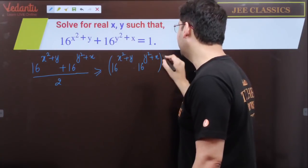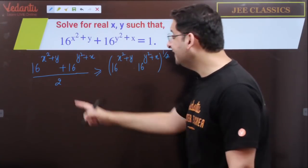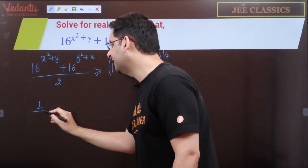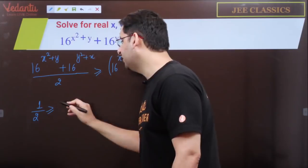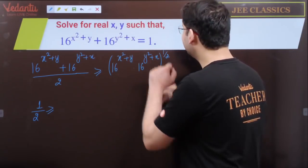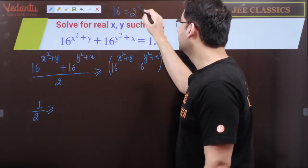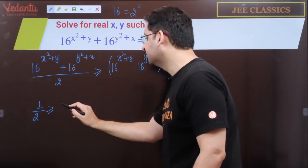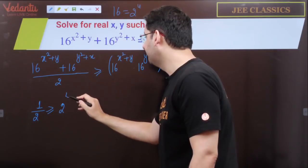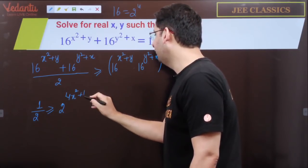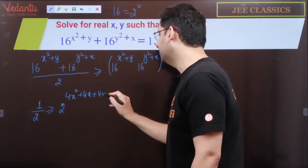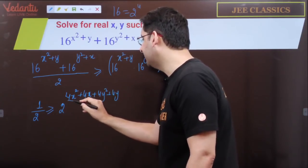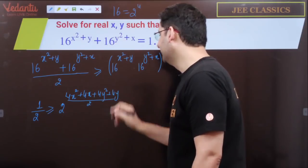Now this portion is given to be 1, so we fill in 1 divided by 2. Let us try to simplify this. 16 is 2^4, so when the bases are same, powers add. This will be 2^(4x²+4x+4y²+4y) raised to the power 1/2, and divided by 2 which becomes the denominator with power 1/2.